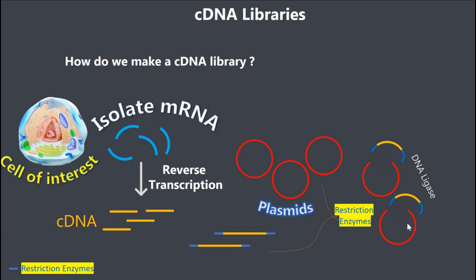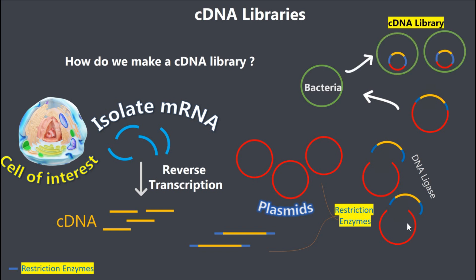Finally, we transform our bacteria with these recombinant plasmids. The combination of all these cells, each carrying a different cDNA, forms our cDNA library. cDNA libraries are very useful if you want to compare differences in protein expression between two different cell types.